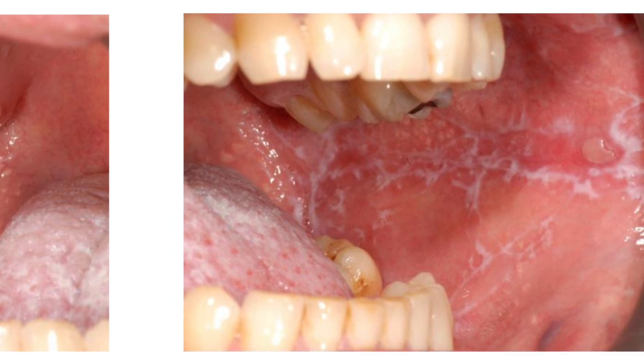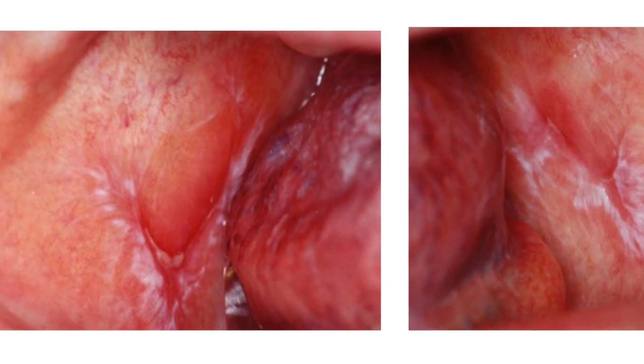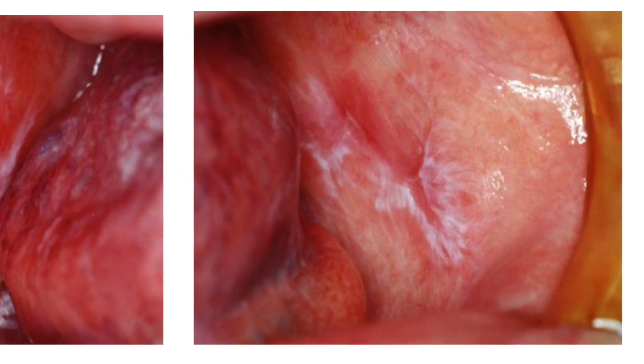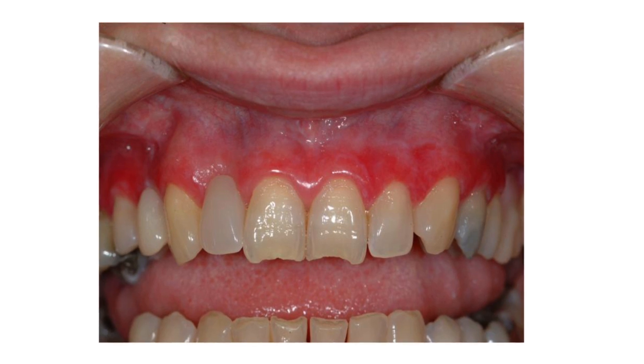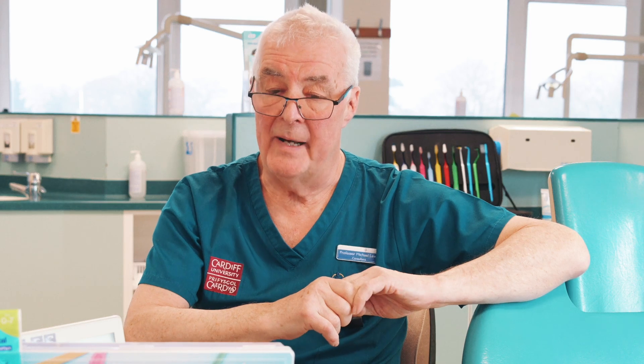It affects both sides of the mouth in a sort of mirror image distribution. So you can get the buccal mucosa affected, the sides of the tongue, the gingiva. And on the gingiva, it can appear as an erythema, like a desquamative gingivitis — an erythema of the gingiva that is not associated with poor plaque control. One good clinical tip is you do not get lichen planus in the hard palate.